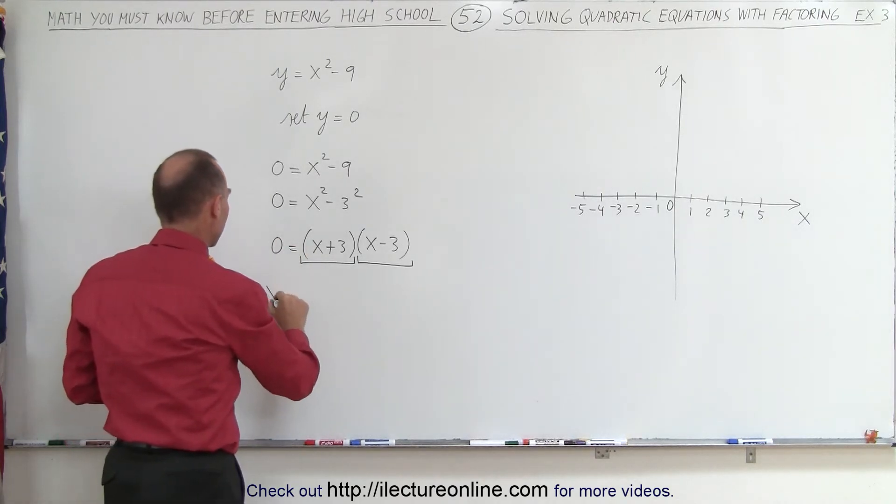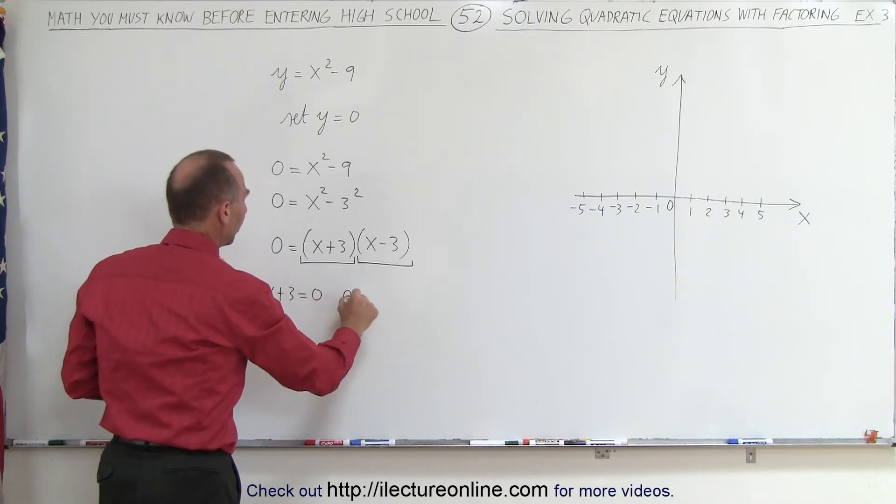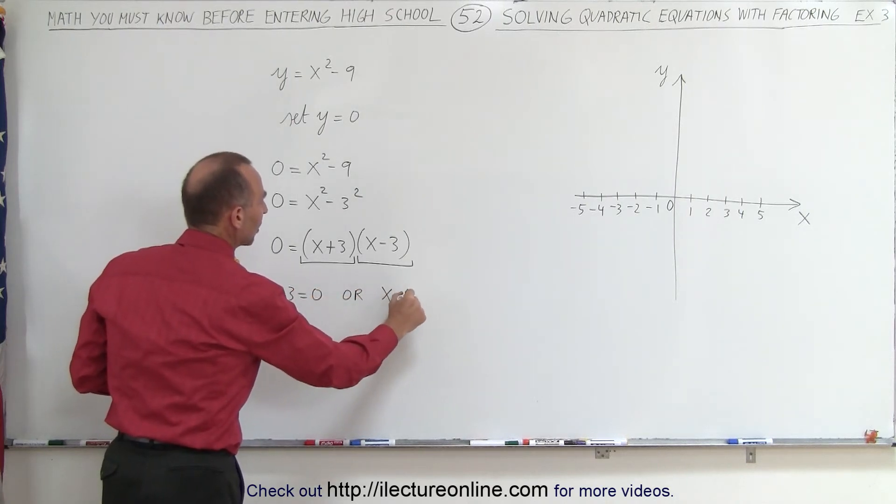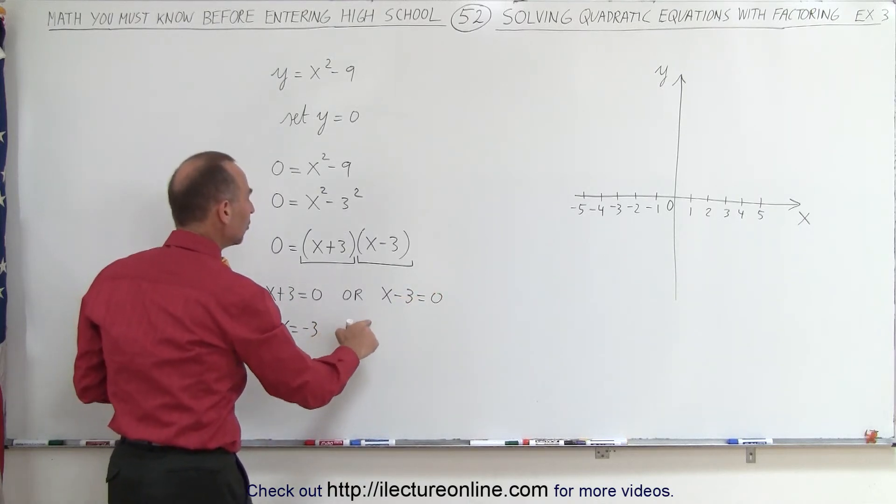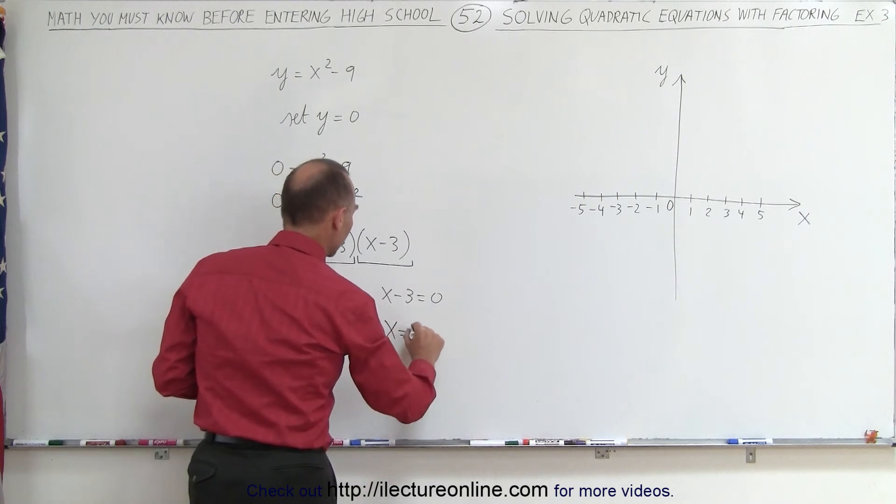This means that either x plus 3 must equal 0 or x minus 3 must equal 0. In this case, x equals negative 3. In this case, x equals 3.